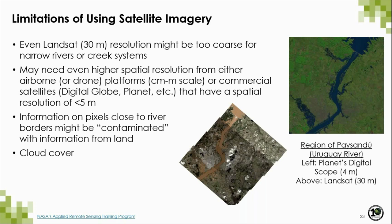Spatial resolution can be a limitation of using remotely sensed data, particularly if the interest is on delineating or assessing relatively small or narrow freshwater systems. Pixels close to the river or creek edges can be contaminated with land-derived information and can produce false results. This is where additional imagery from high-resolution sensors can be particularly useful in complementing freely available Landsat data. The images on the right show both a Landsat image from the Uruguay River Basin and a high-resolution image provided by Planet's Disaster Program of the same river, showing more details near the river during a flood event in May 2017.